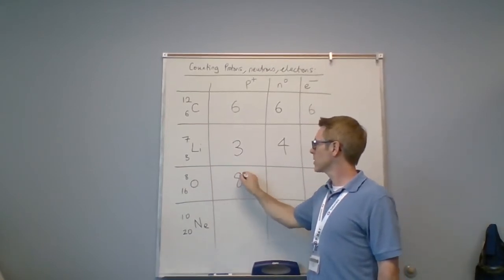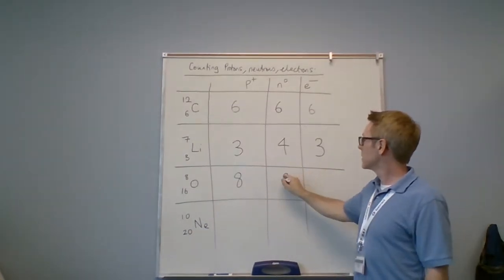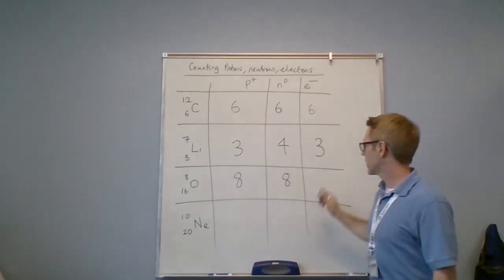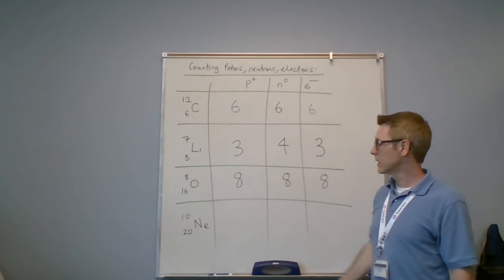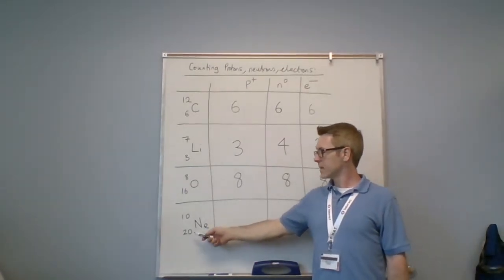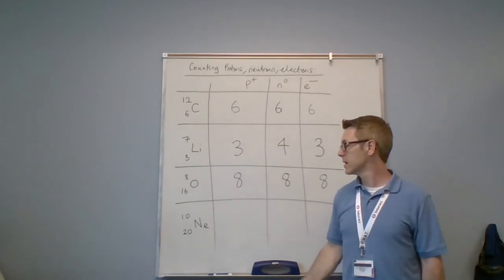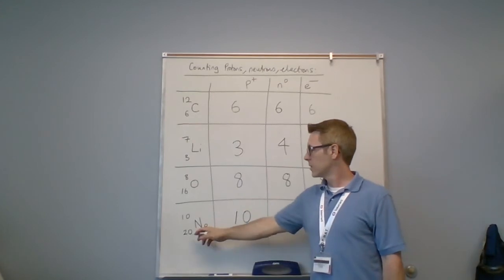Neon: again it's inverted. I know it's inverted because 20 is larger than 10, so 10 must be Z. So I have 10 protons. 20 minus 10 are 10 neutrons.